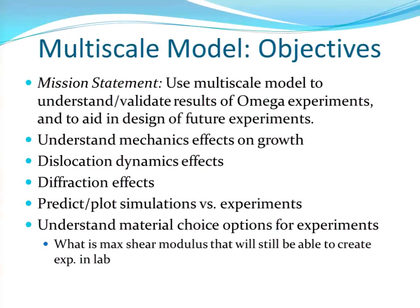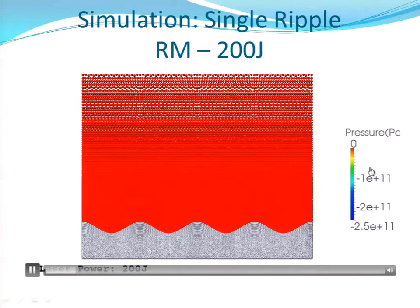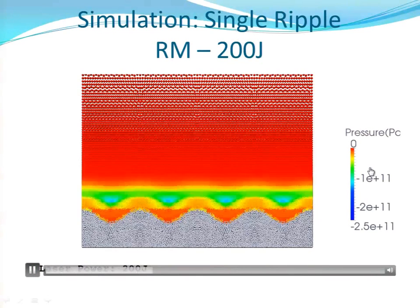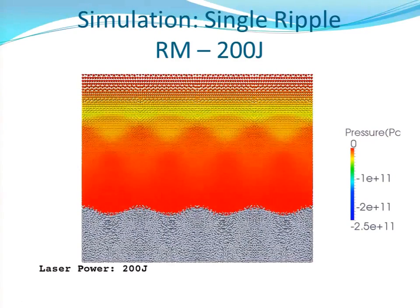From our Caltech point of view, we're interested in understanding the mechanics effects, dislocation dynamics, and diffraction effects. Our end goal is to be able to plot the simulations versus experiments, and then possibly use this to understand what materials we could use in our Caltech experiments. This is one of our simulations — this is for RM at 200 joules and a single ripple.